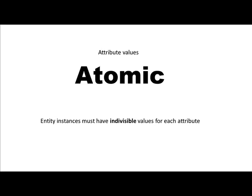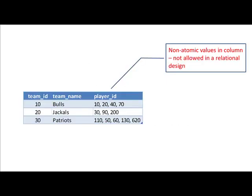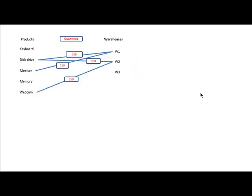To illustrate a violation of atomicity: consider a team table with team ID 10, team name 'Bulls', and four different player IDs — 10, 20, 40, 70. That's not atomic because it's four different values, not one. You can't put four different values into one attribute value. That's what we mean by non-atomic, and non-atomic values are not acceptable.